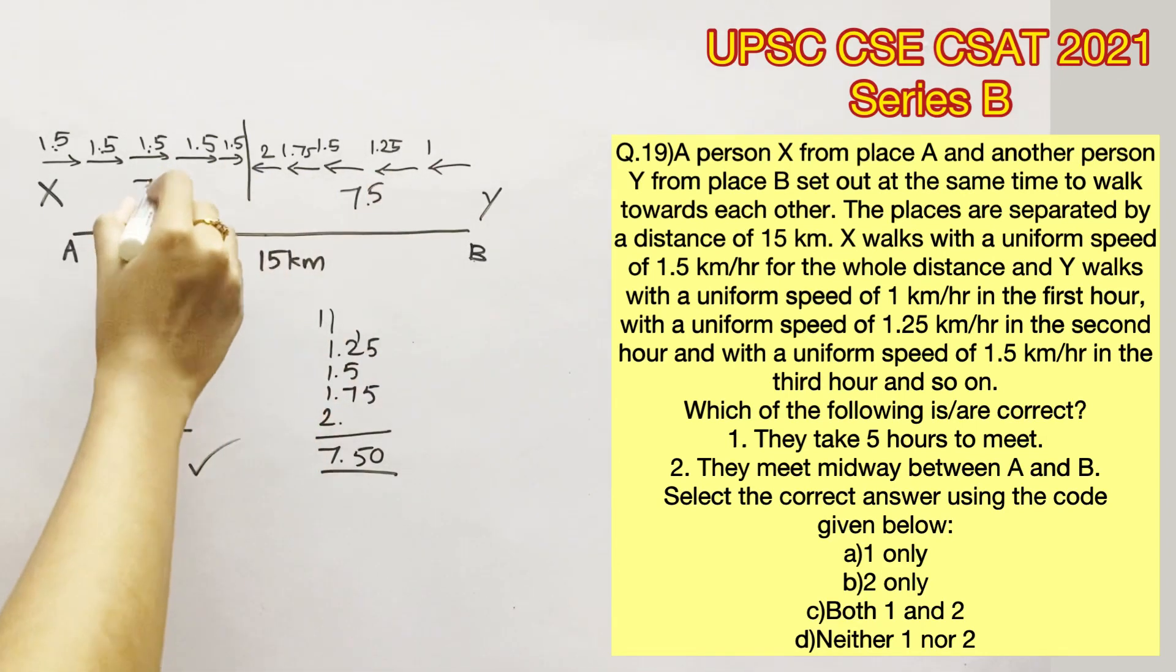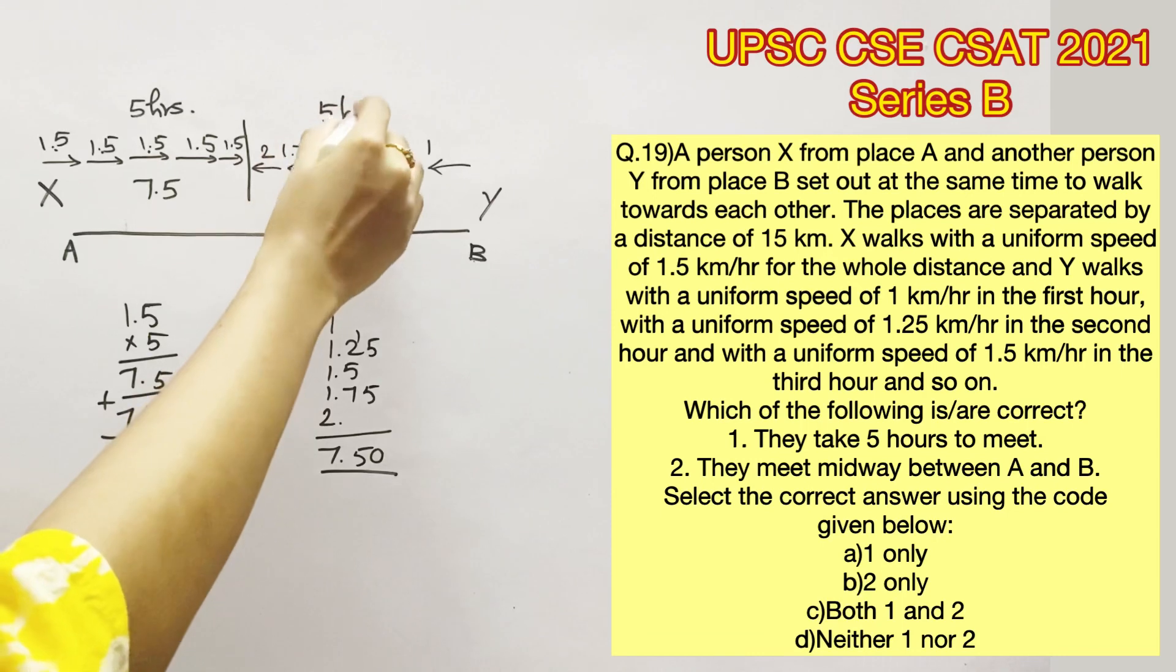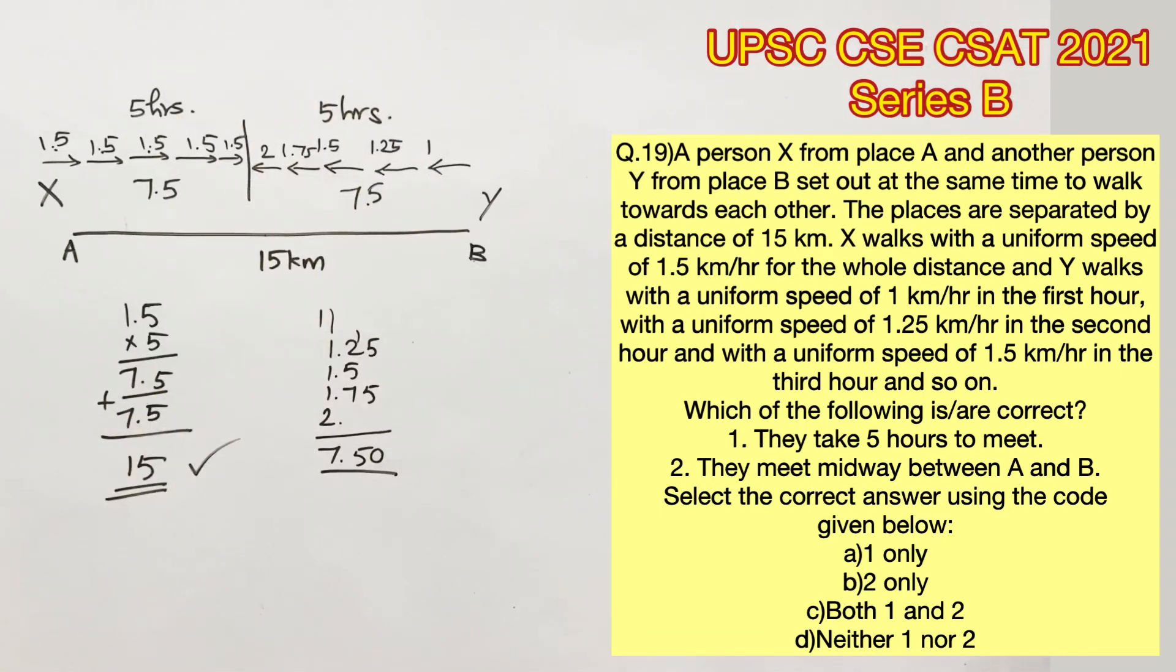The first statement says they take 5 hours to meet, which is true because they traveled for 5 hours. The second statement says they meet midway between A and B, which is also true because 7.5 from either side would be the midpoint of 15 kilometers.